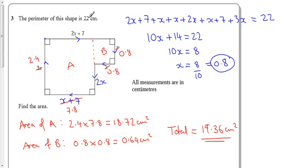We used the information they gave us about the perimeter, all the way around the outside of the shape, to find out that x was 0.8. Then we used that to do calculations for the area on the inside. Hope that makes sense.